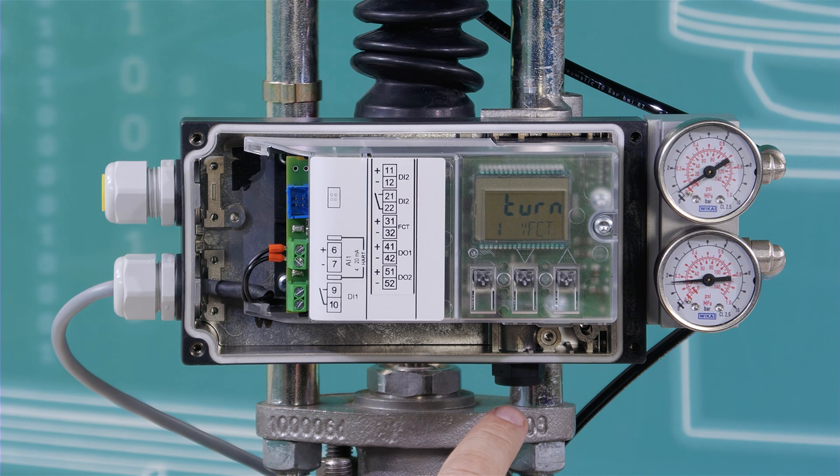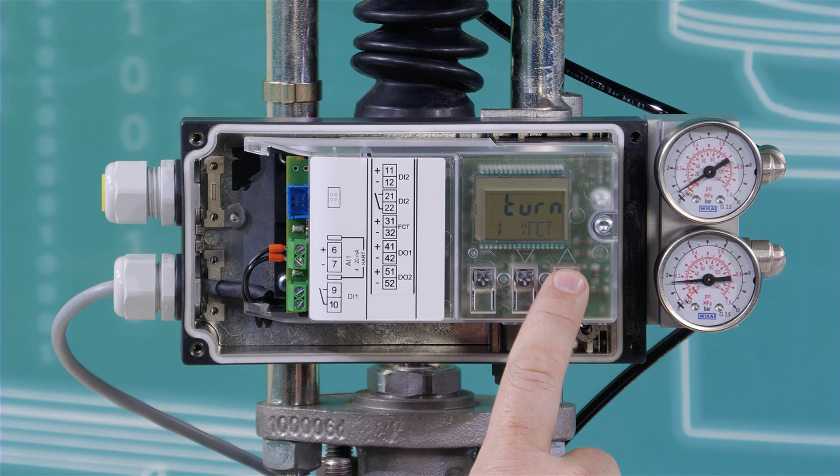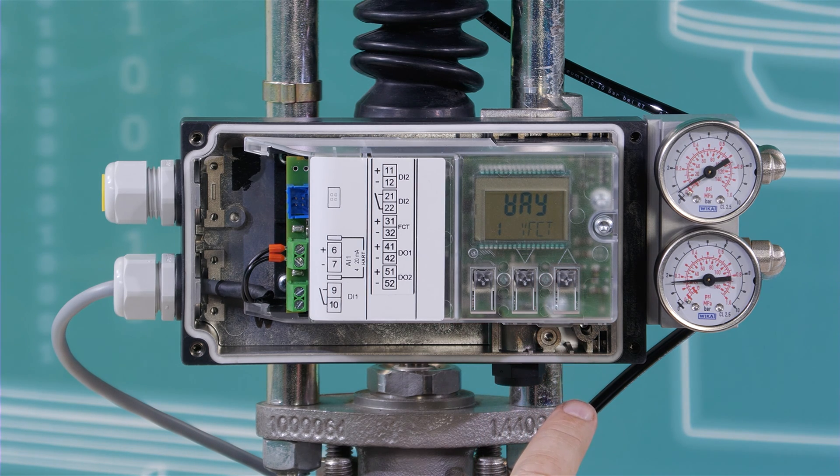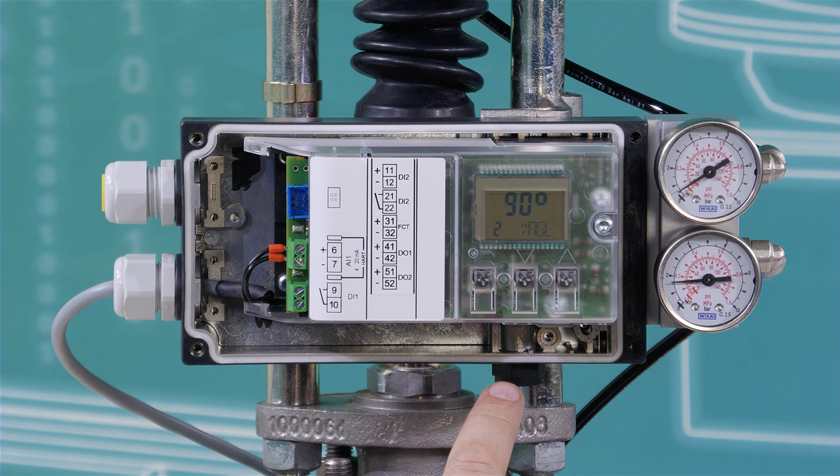At parameter 1 YFCT, you need to set up TURN for a part-turn actuator, and in our case for a linear actuator, you need to set it to RAIL. The next parameter is YAGL. We keep it always at 90 degrees.